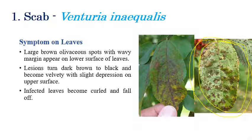Initially on the lower surface, olivaceous spots can be seen along with a wavy margin. These olivaceous spots are observed on the lower surface of the leaf.